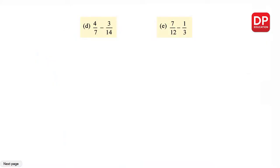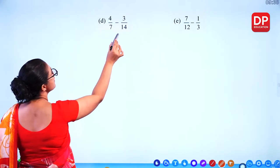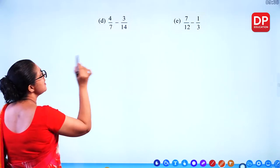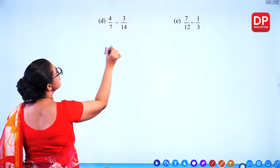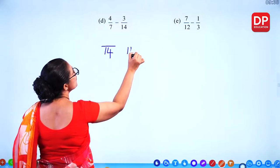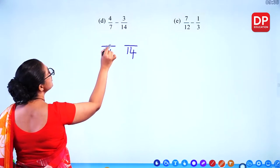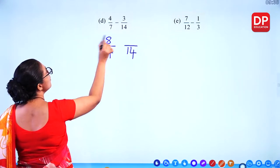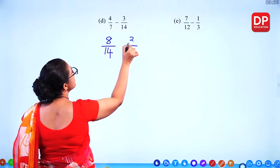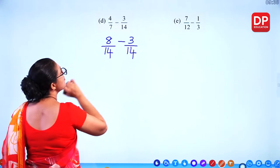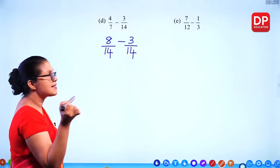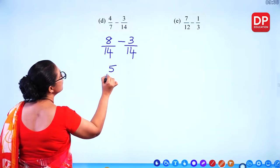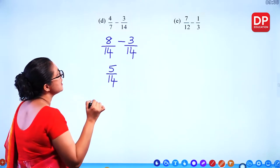Now subtraction: the denominators are 7 and 14, so the common denominator is 14. Multiply: 2 times 7 = 14, and 2 times 4 = 8 for the first fraction. The second fraction's numerator stays as 3. Subtract the numerators: 8 minus 3 = 5. The answer is 5/14.